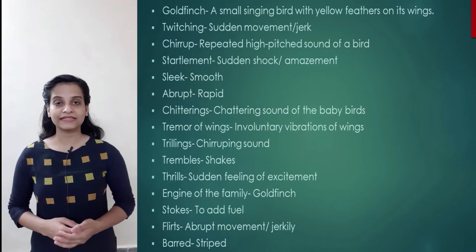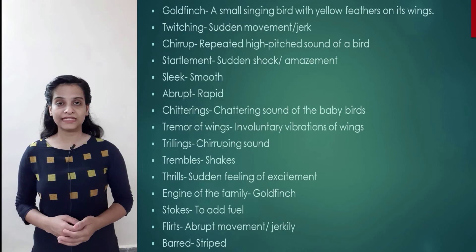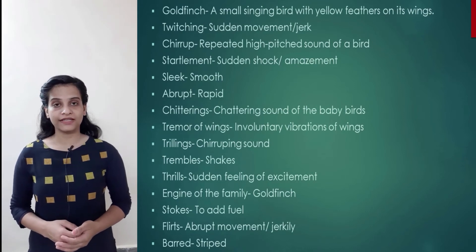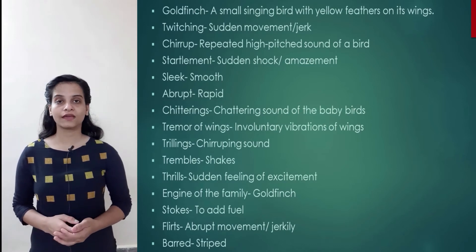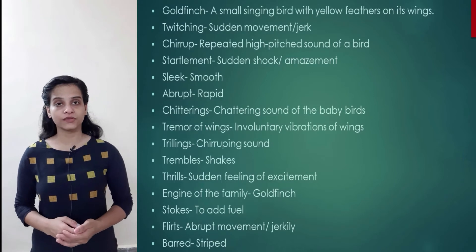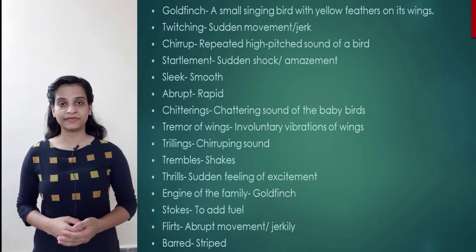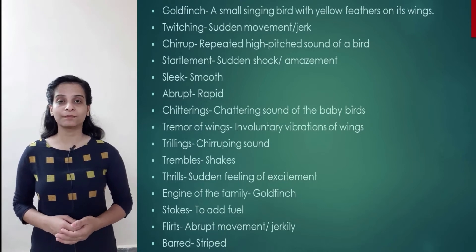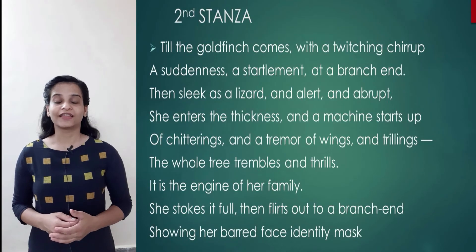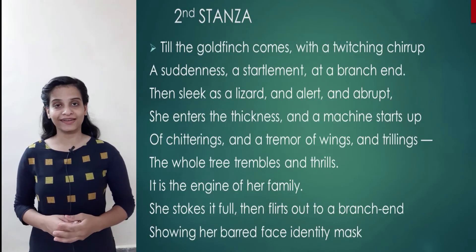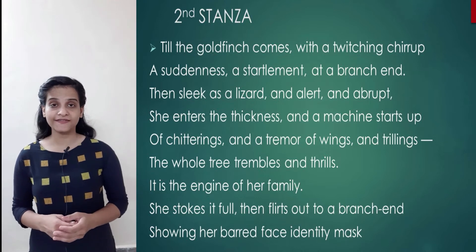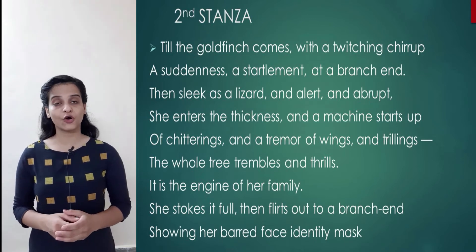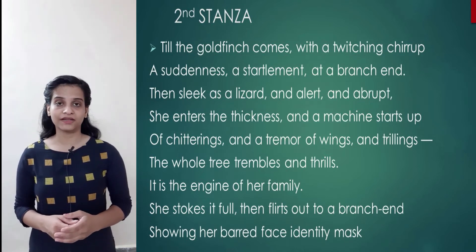Continuing with vocabulary: 'tremble' means shakes; 'thrill' means sudden feeling of excitement; 'engine of the family' is used for the goldfinch bird; 'stokes' means to add fuel; 'flirts' means abrupt or jerky movement; and 'barred' means striped. The poet says the tree is still and silent until the goldfinch arrives and sits on one of its branches, making high-pitched sounds which cause a sudden amazement or movement at the ends of the branches.